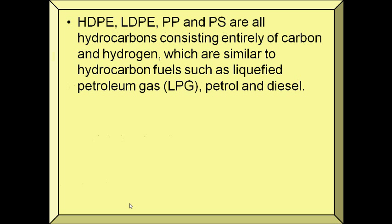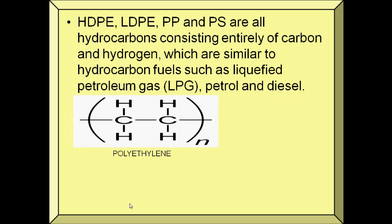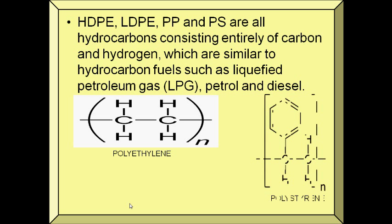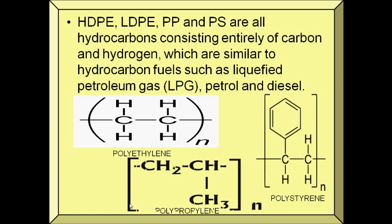Polyethylene, polypropylene, and polystyrene are all hydrocarbons consisting entirely of carbon and hydrogen, which are similar to hydrocarbon fuels such as liquefied petroleum gas, petrol, and diesel. Here is the structure of polyethylene, polystyrene, and polypropylene.